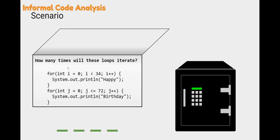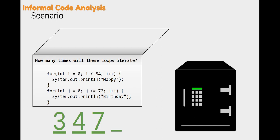The first loop, the I loop, starts at zero. We are looping while I is less than 34, and we are counting up by one every time. So that means we are counting from zero up to 33. 33 will be the last value of I. Zero through 33, that's 34 different iterations. Looking at the J loop, it starts at zero and loops while J is less than or equal to 72, counting up by one. We are starting at zero, going up to and including 72. That's 73 different iterations.